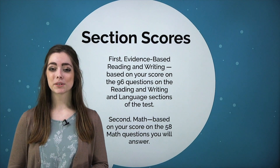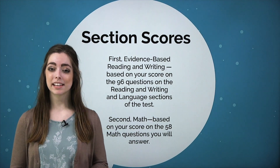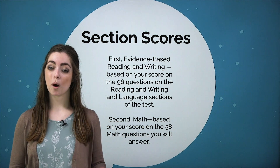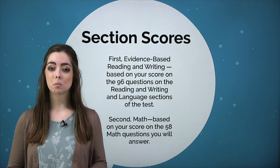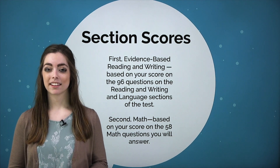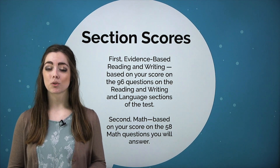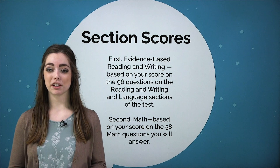You will receive two main section scores on your score report: one for evidence-based reading and writing, and one for math. These are based on your raw score on each section.